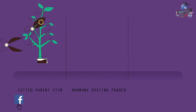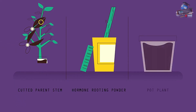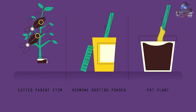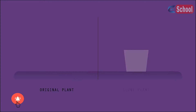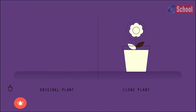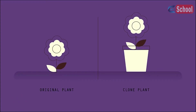Shoots are cut from the parent plant, then the end of each shoot is dipped in hormone rooting powder and placed into a pot of soil. The hormone rooting powder will encourage the cutting to start growing roots, and soon a whole new plant will have grown which is identical to the original plant.